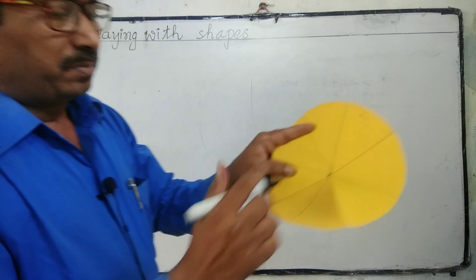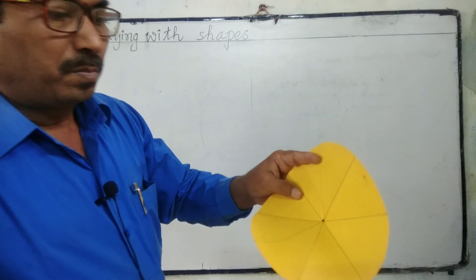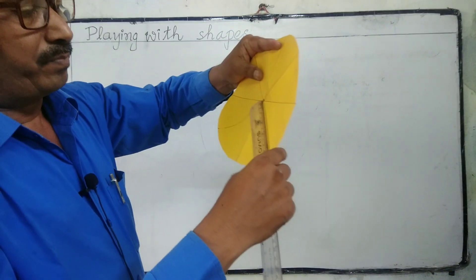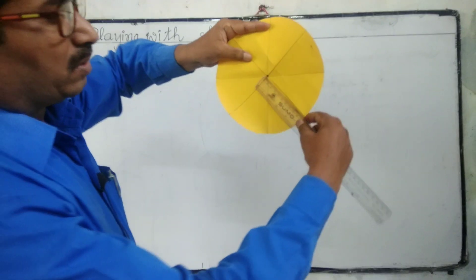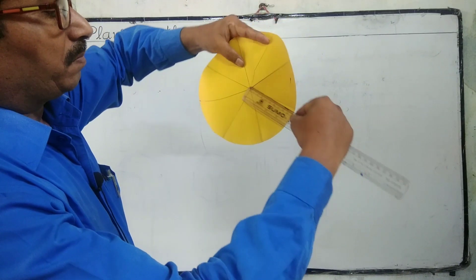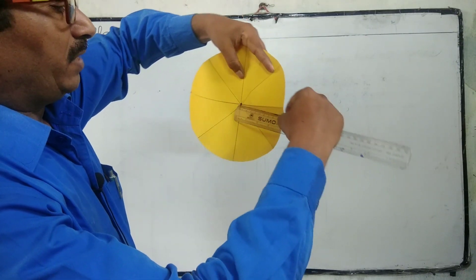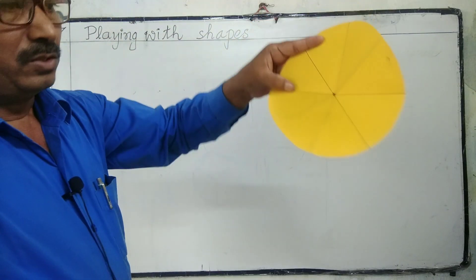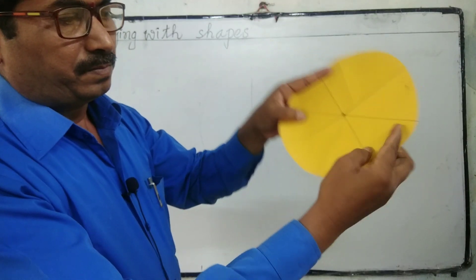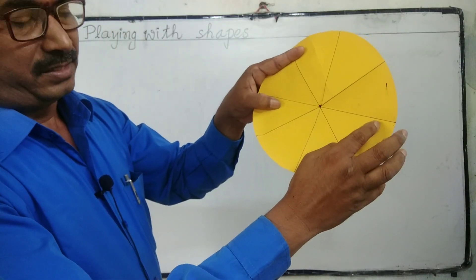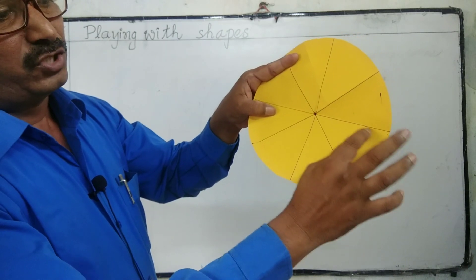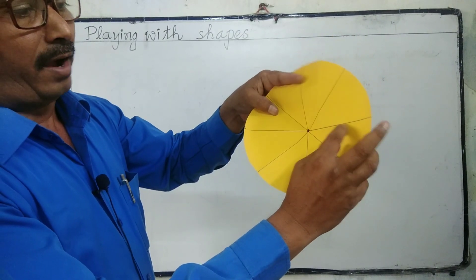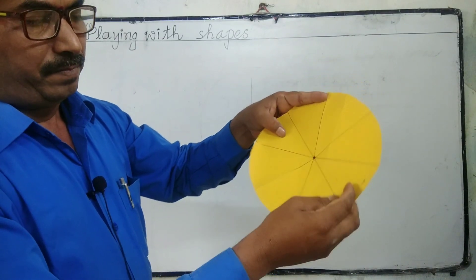Now measure all these fold lines using a scale. You will find that all these lines are the same length. These lines are called the radius. The radius lines are always equal in a circle.